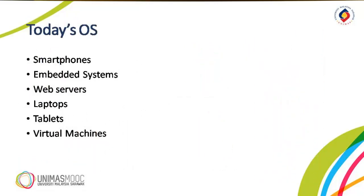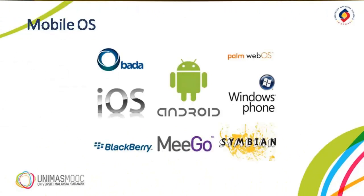In today's operating systems, the OS is specially developed for smartphones, embedded systems, web servers, laptops, tablets, and virtual machines. This slide shows the mobile operating systems with symbols that may be familiar to you, for example, Android and iOS.